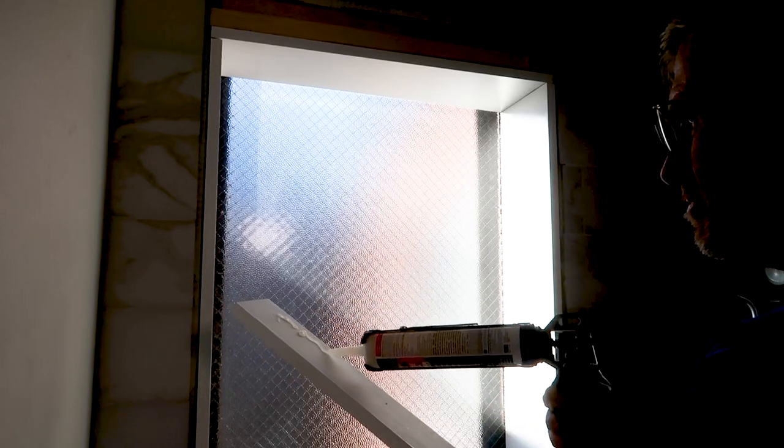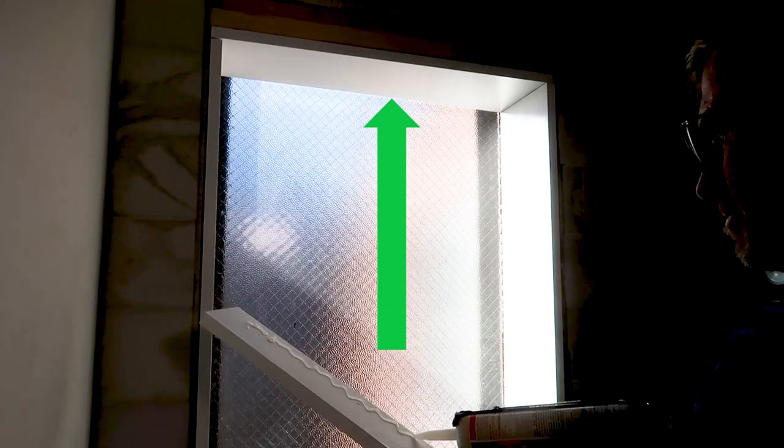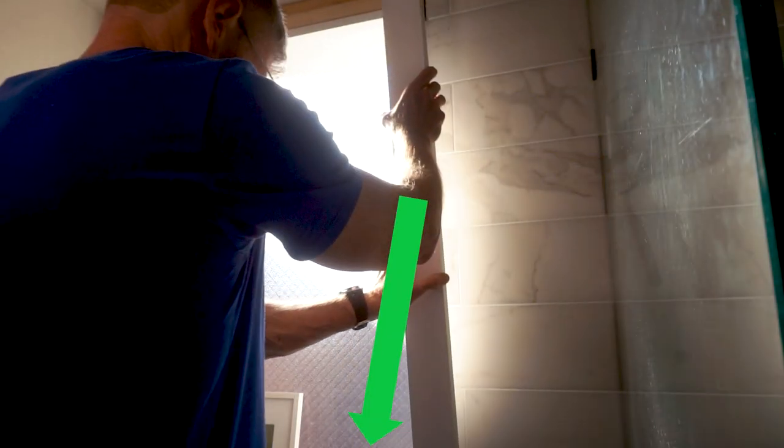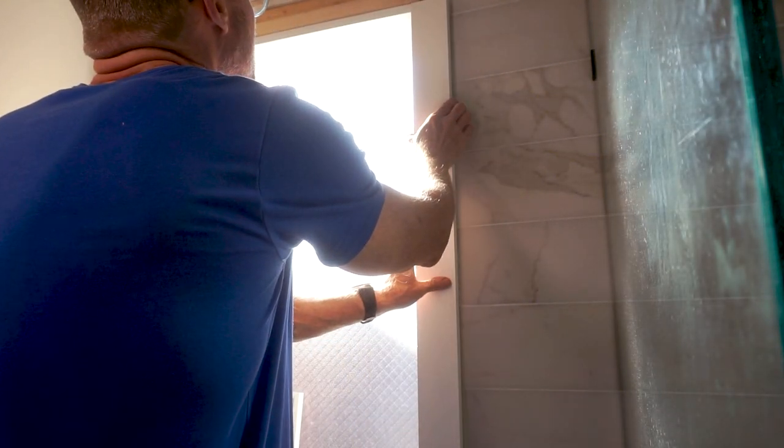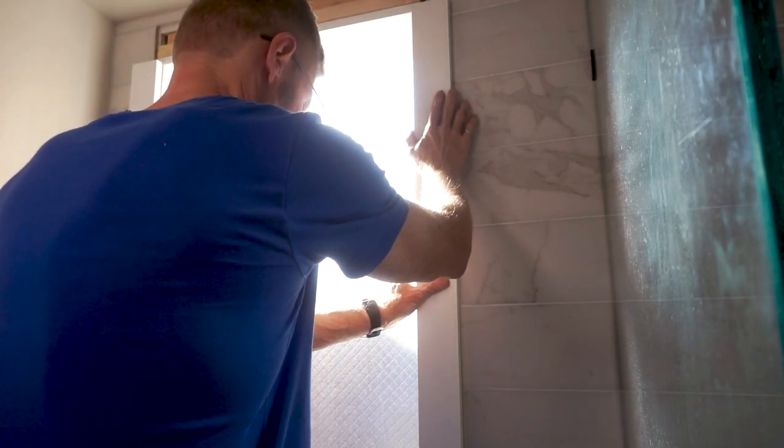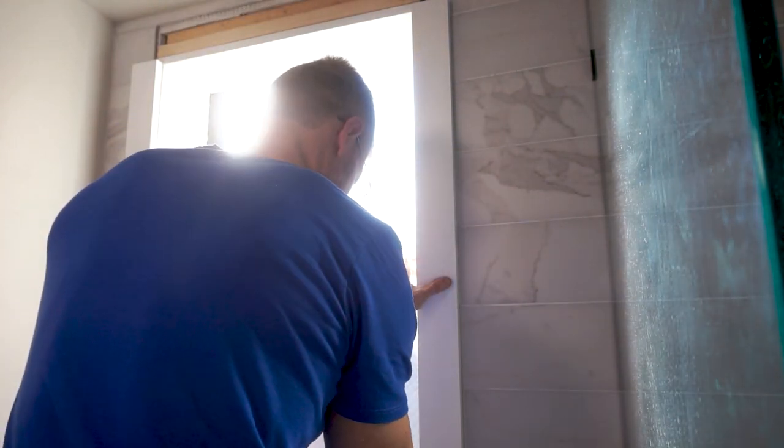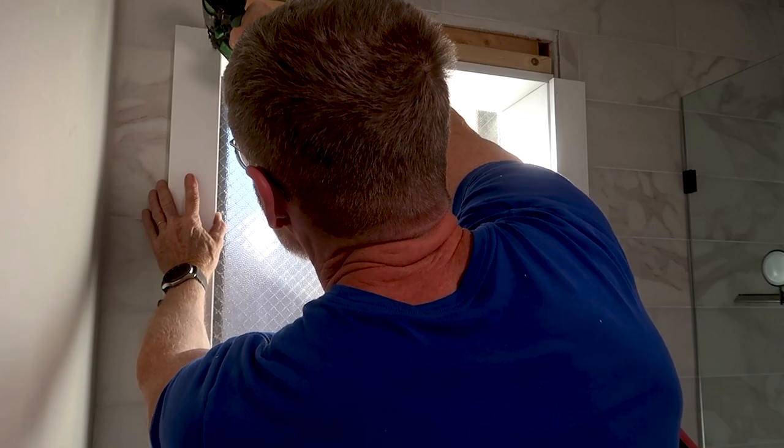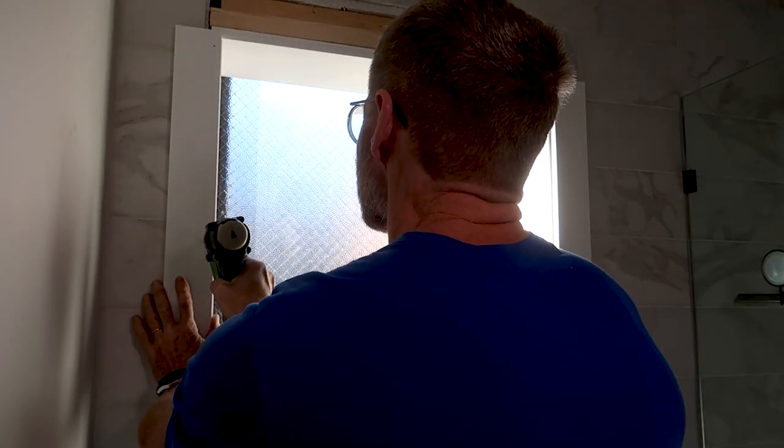Next, I'll install the window trim. I had already installed the head jambs, the side jambs, and the window stool made from hickory and painted white. Many people refer to that as the window sill, but the sill is the part that's outside. It's the stool that is inside that you can set something on.